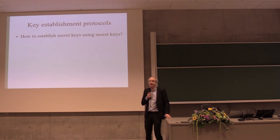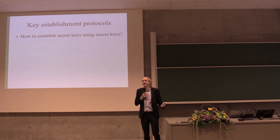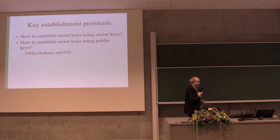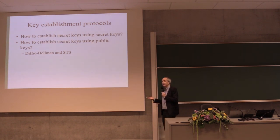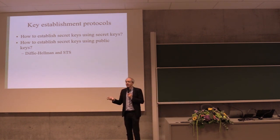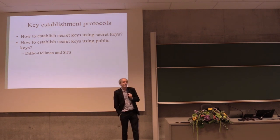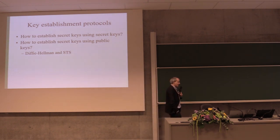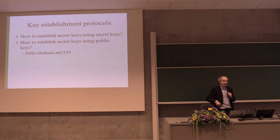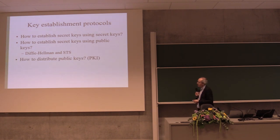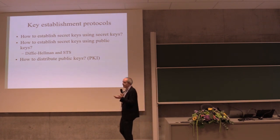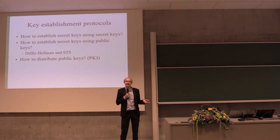We first look at: given I have secret keys, how can I install new secret keys? It seems like a waste of time, but we'll come back to that. Then, using public keys — assume I somehow have public keys of the other parties, like web servers. How can I establish symmetric keys? We'll look at Diffie-Hellman and RSA for this. The last question is how to get everybody's public key — that's called public key infrastructure, and it's actually the hard problem in practice.